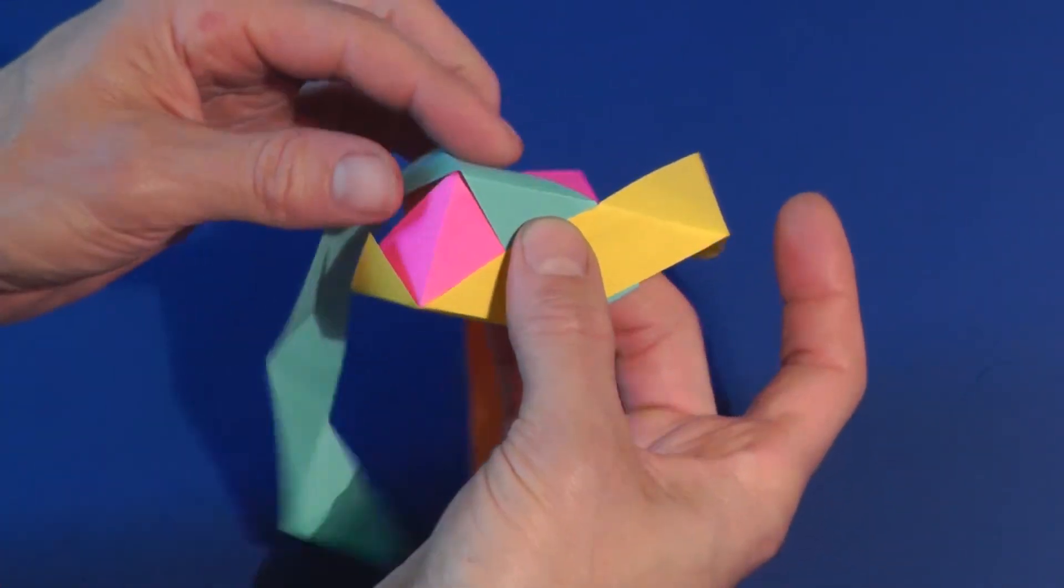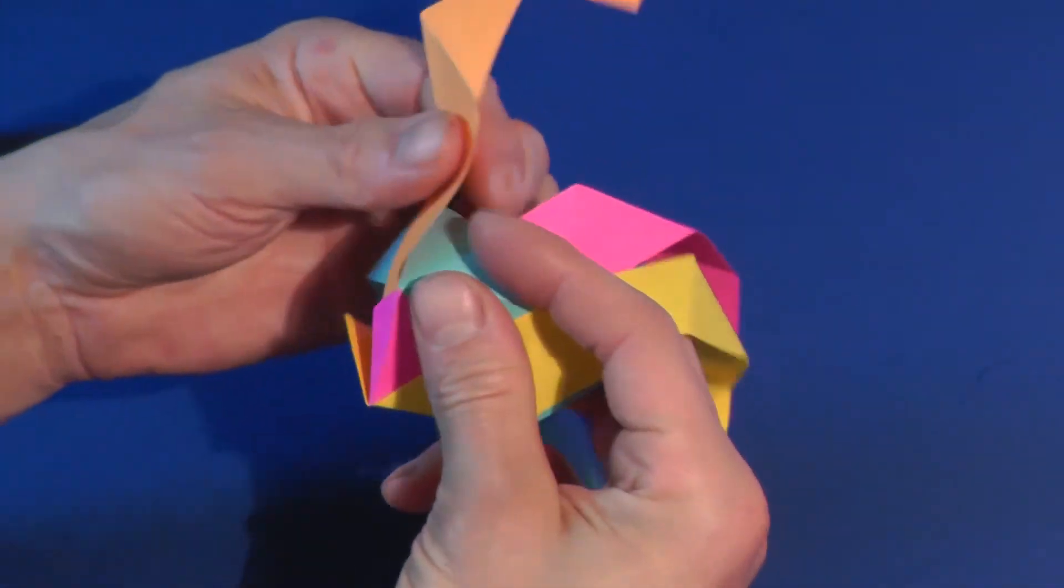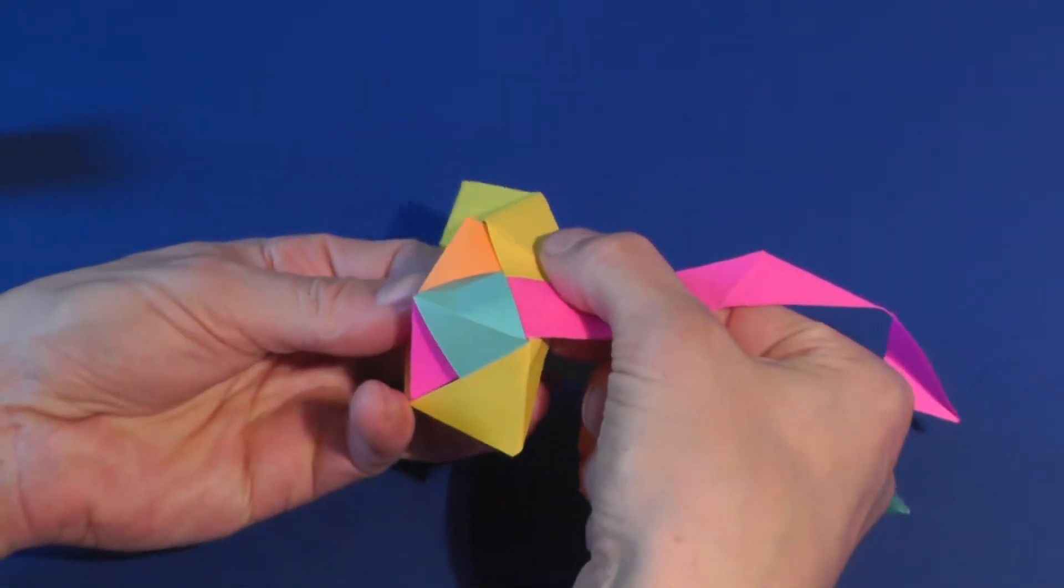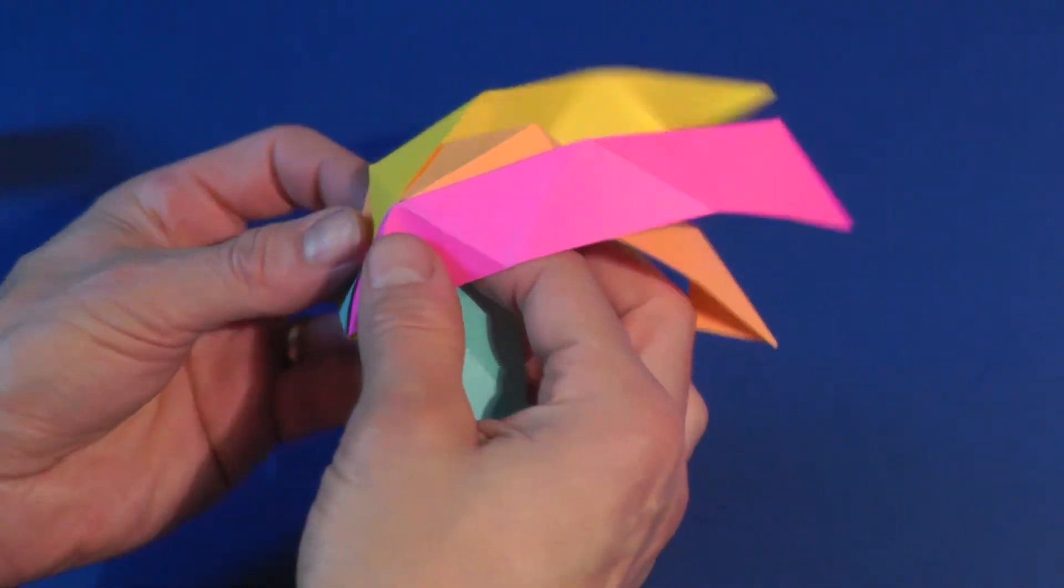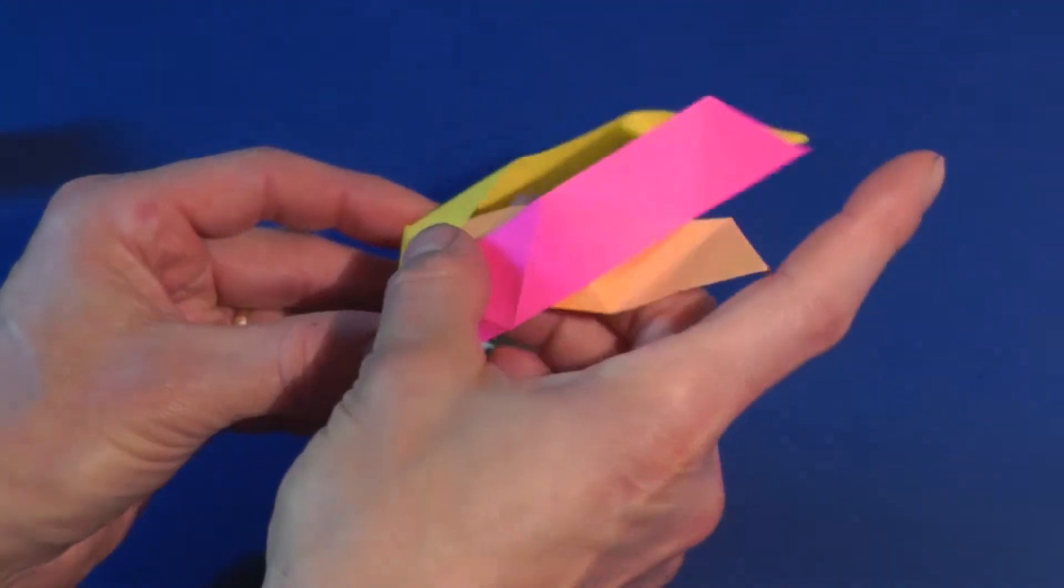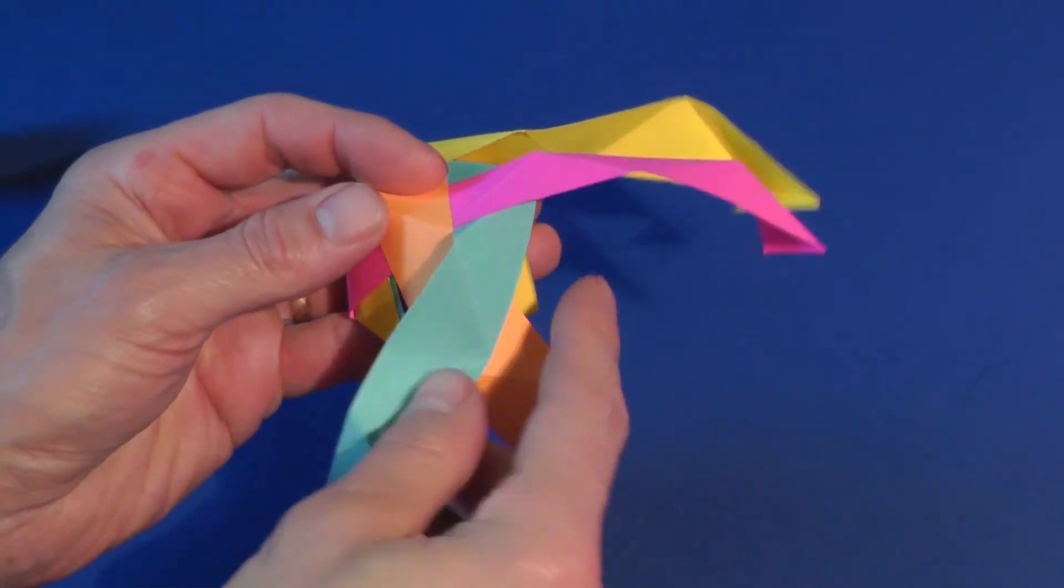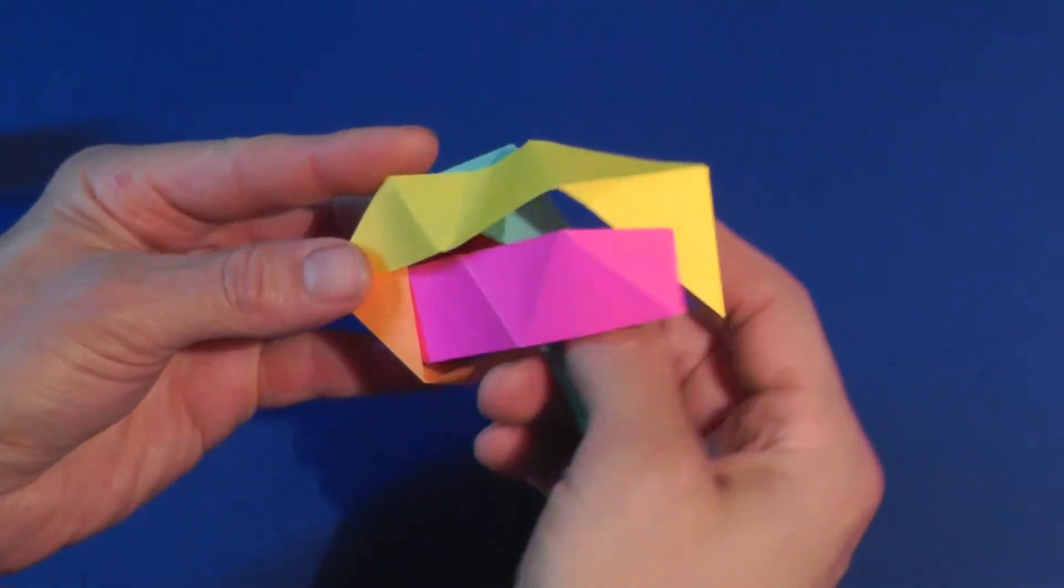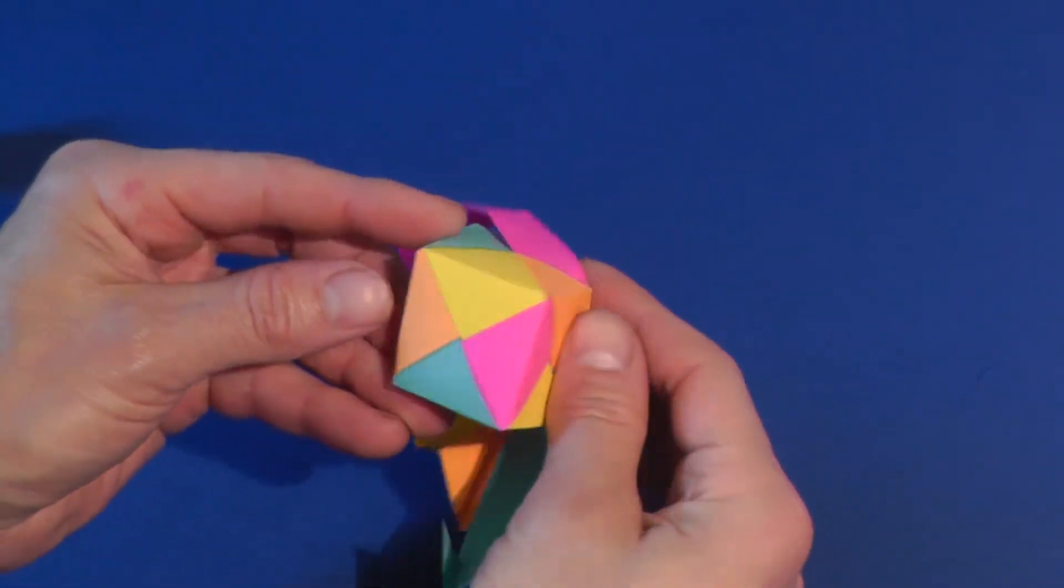Instead of relying on numbers to determine which strip is over the other, you will look at colors. Each face of the cube shows one triangle of each color. Each color folds over one edge, but then disappears behind a strip of a different color.